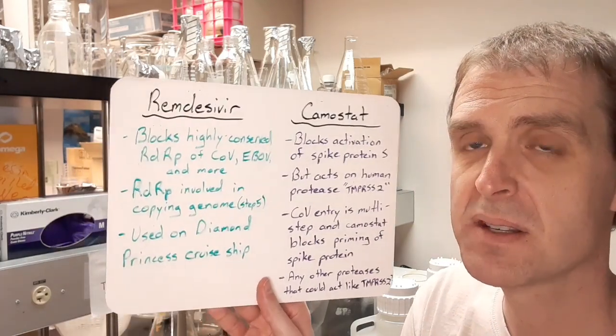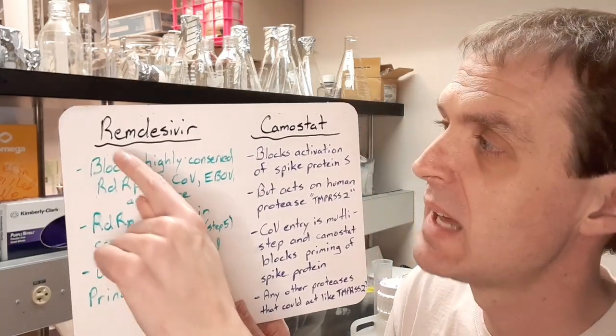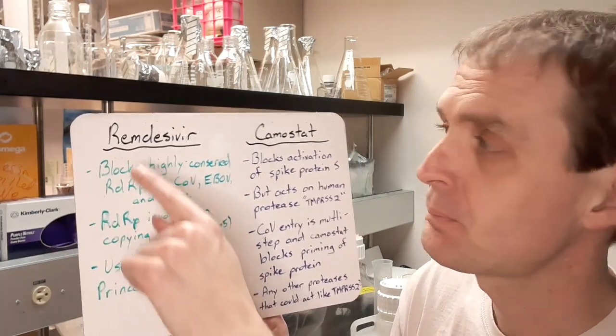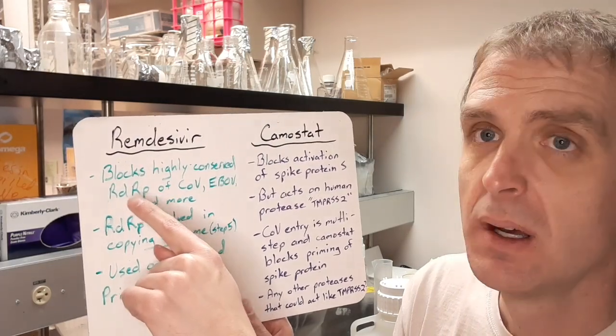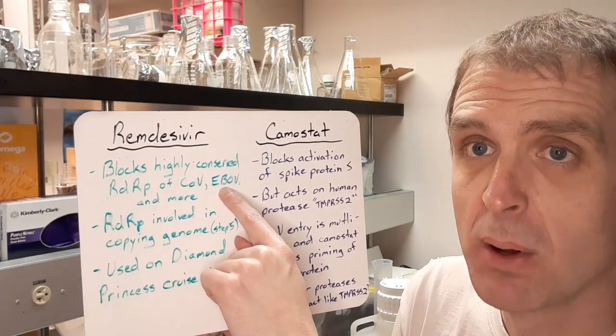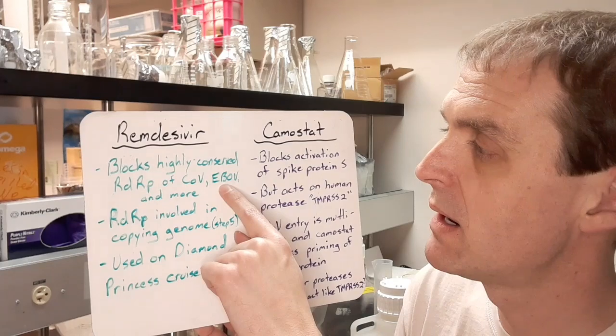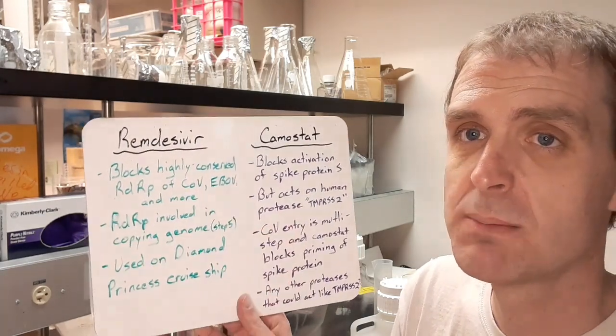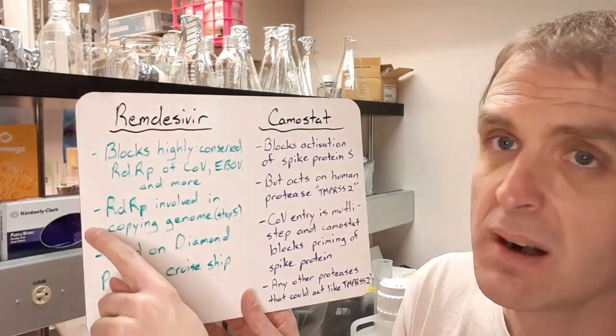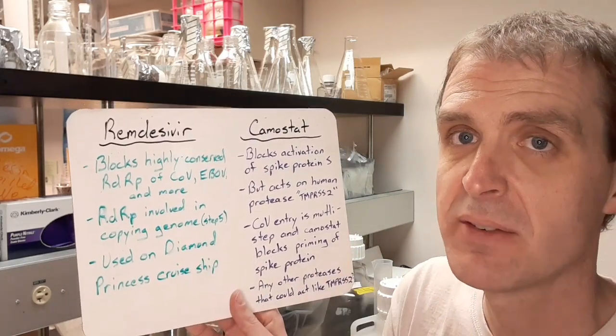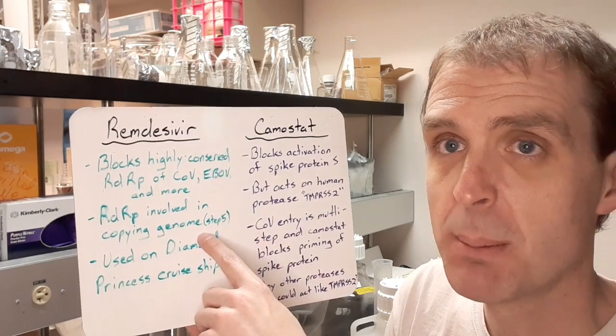So since this is my second video now, I just want to do a quick comparison of those two drugs that I've talked about. Last video, episode 32, even though I called it 31, is remdesivir. It blocks a highly conserved protein called an RNA-dependent RNA polymerase of coronavirus. Other viruses have that, like the Ebola virus also has RNA-dependent RNA polymerase and others. And so this drug here might work against multiple viruses. The RNA-dependent RNA polymerase is involved in copying the genome. And if you go back to our seven steps of virus replication, that was step number five.